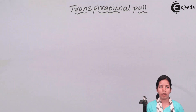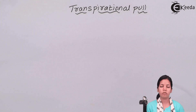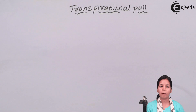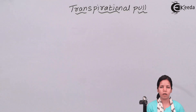In simple language, transpirational pull is nothing but movement of water from the soil with the help of xylem vessels — that is, tracheids and vessels — which are present inside the plant body. We all know that xylem is important for the conduction of water. These xylem vessels are present throughout the plant and carry out the process of transpirational pull, which is basically absorption of water from the ground.